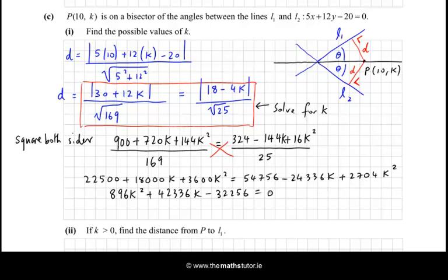Now, it possibly factorizes, but it's hard to tell, so I'm going to just use the minus b formula. OK, so that means that k, I have room over here, is equal to -b, which is -42336, plus or minus the square root of b², which is 42336², minus 4 by a, which is 896, by -32256.